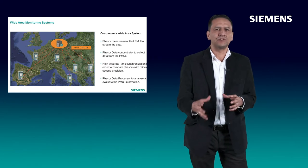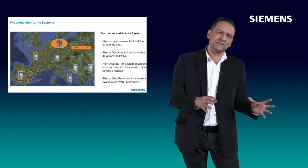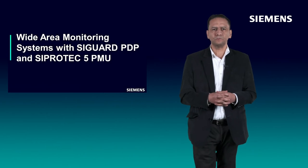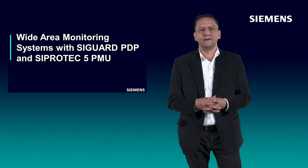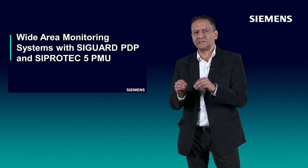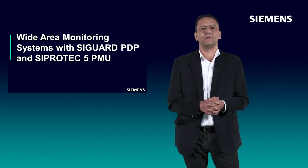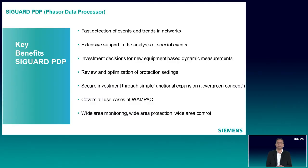Now let's see how to build a Wide Area Monitoring System with Siemens applications. Let's move to the second topic: how to build a Wide Area Monitoring System with SAGUARD PDP and SIPROTEC 5 PMUs. The first topic that we require to build a Wide Area Monitoring System is to have a phasor data concentrator. Siemens has a phasor data concentrator, PDC, that is not only a PDC. SAGUARD PDP is a phasor data processor.